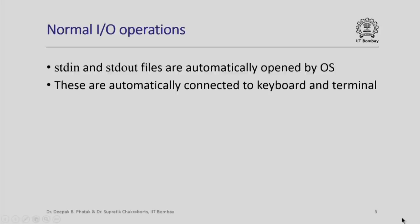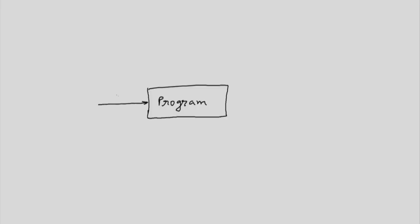Let us look at this action of the operating system diagrammatically. When we execute our program, the operating system connects the file stdin to our program and similarly connects stdout to our program. What the operating system does by default is that it connects stdin to the keyboard and stdout to the monitor.